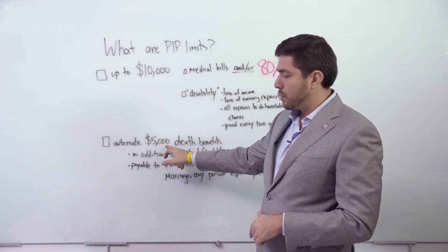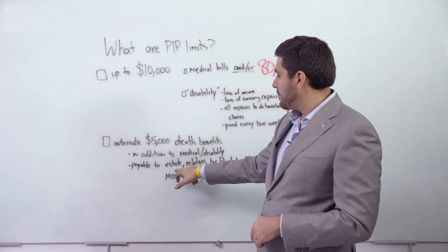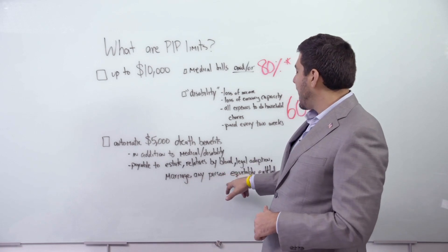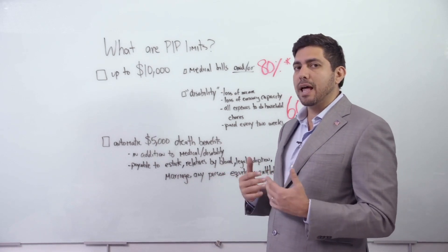The $5,000 obviously goes to the person's family. Who is it payable to? It's payable to the estate, relatives by blood, legal adoption, marriage, or any person equitably entitled to the death benefits.